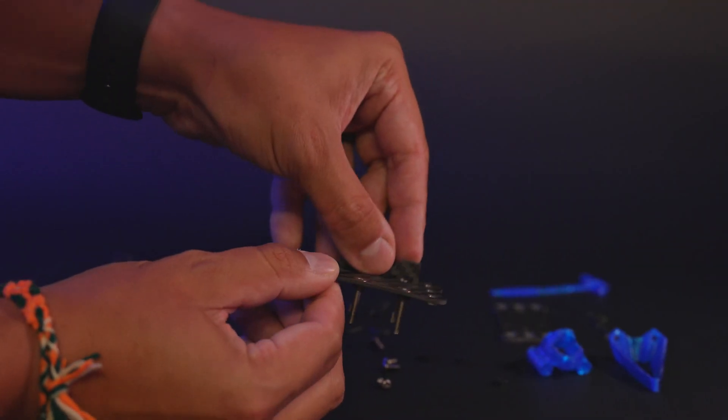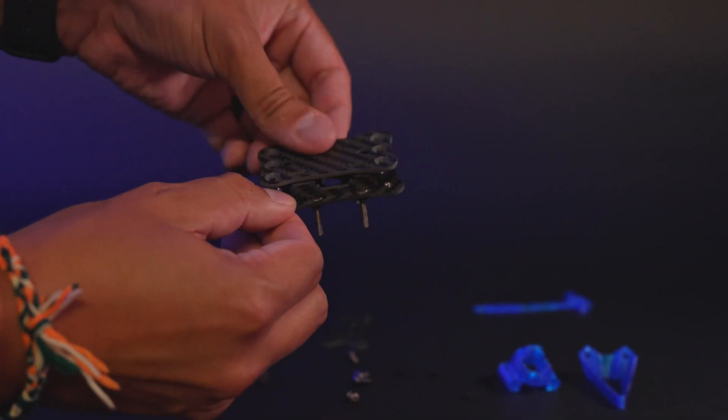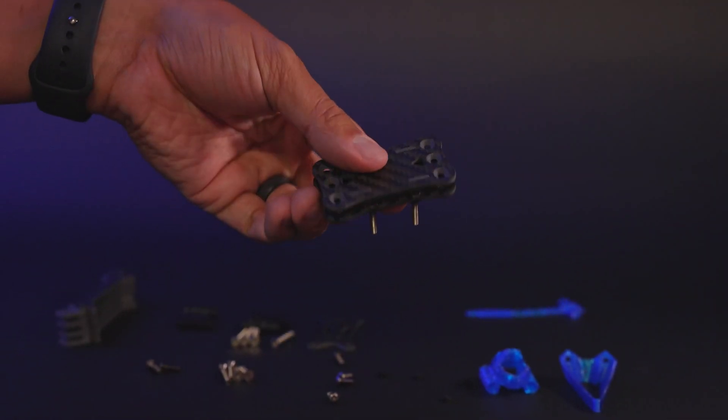Then you're going to grab your vertical stiffeners, and you're going to get the side with the three little nubs and put it into the mid plate. And then the side with the two notches goes into your bottom plate.